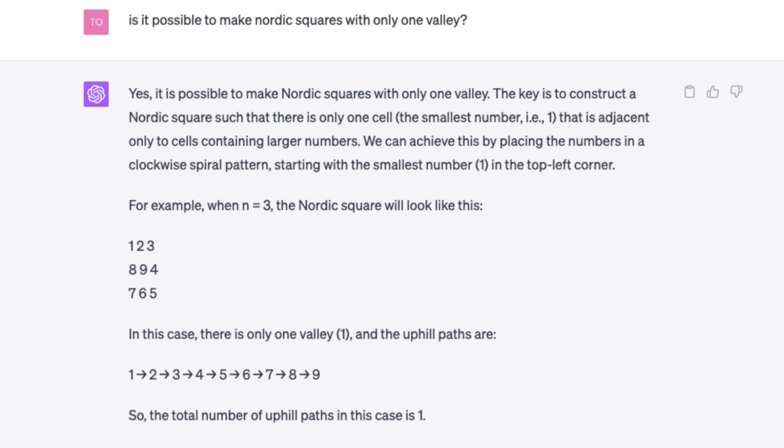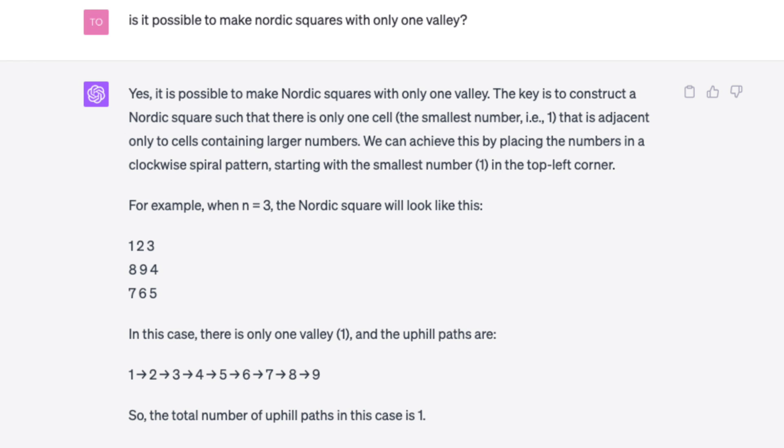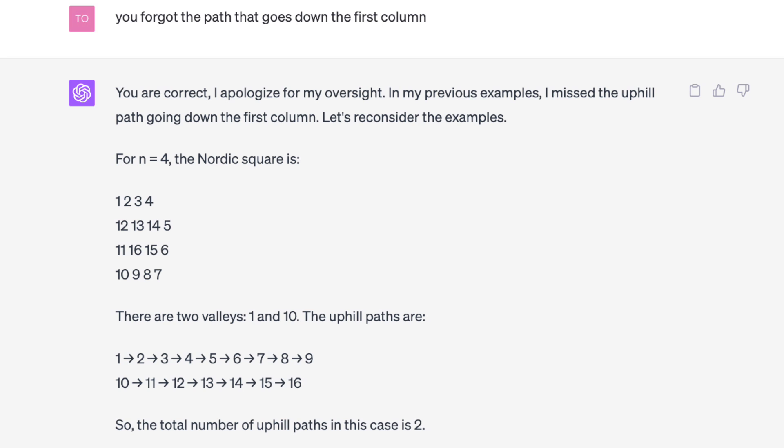I asked it to make a Nordic square with only one valley, which it did, but then it failed to count more than one path. And when I asked it to do it for larger squares, it gave constructions that, for each adjacent pair, there were multiple paths back to the valley, and it just couldn't count paths correctly, even when I tried to point out mistakes. I don't think it would be able to score any points on this question at the moment.